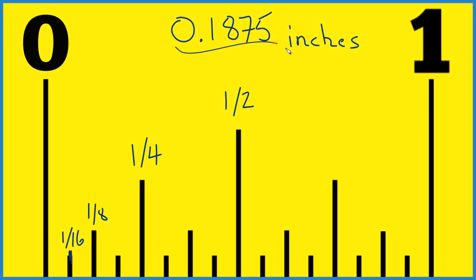So if you have the decimal 0.1875 inches and you want to know where that is on a ruler or a tape measure, here's how we can do that.